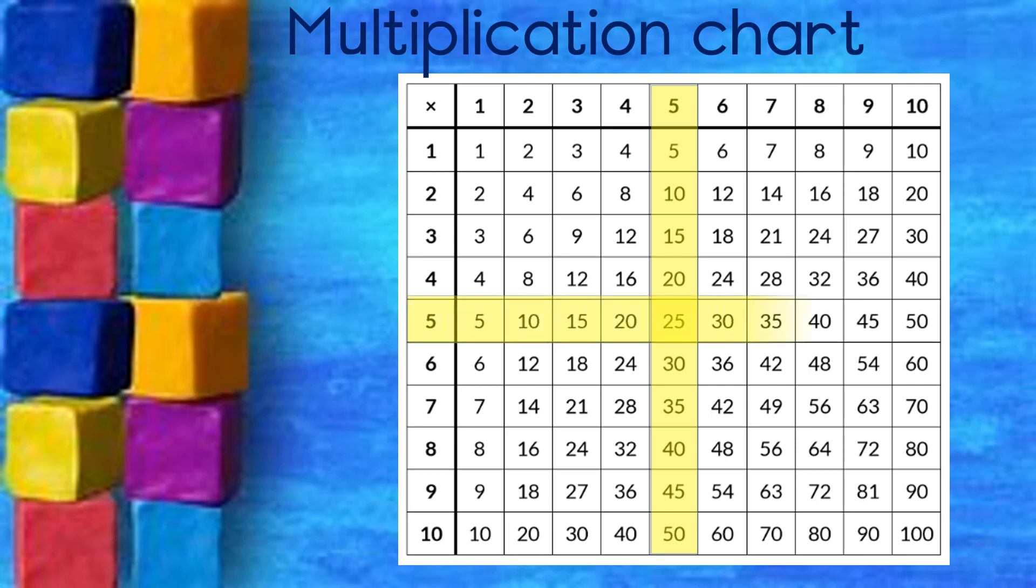If I look at the rows and I go to 5, it's also counting in 5. This way it is going across.